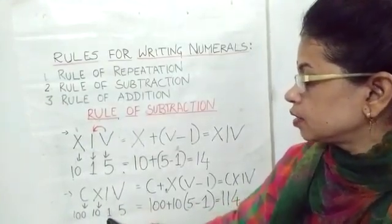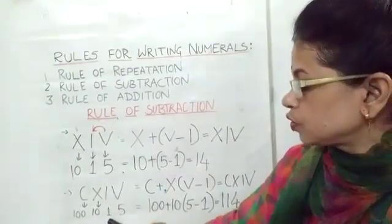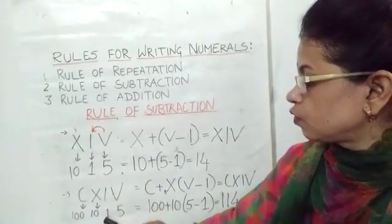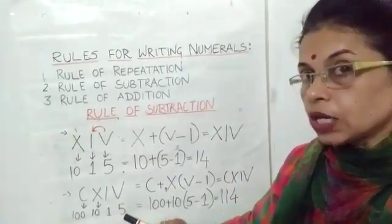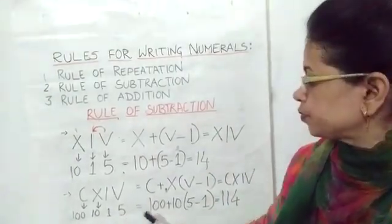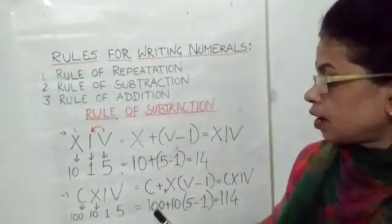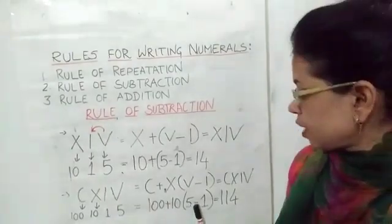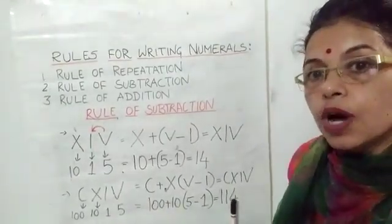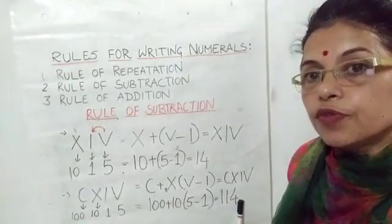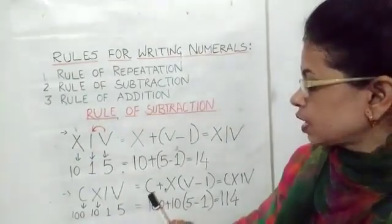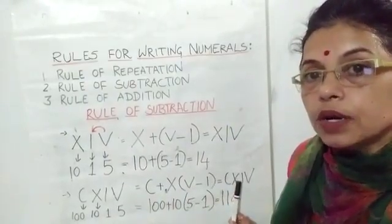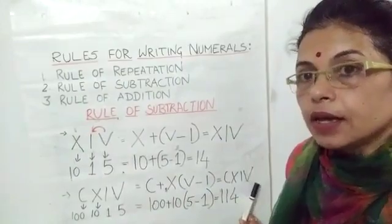I is a smaller value which is written between 10 and 5. So we subtract it from the number next to it, which is 5. So we write it as 100 plus 10 plus (5 minus 1), which is equal to 114. That is C plus X plus (V minus I), which becomes CXIV.